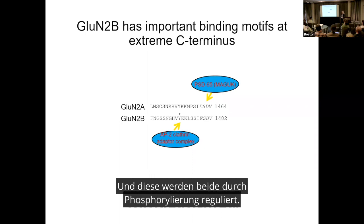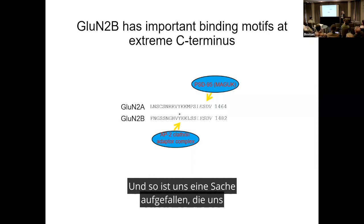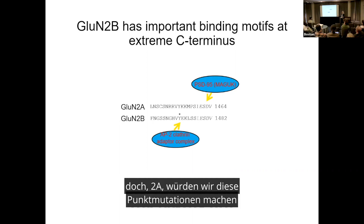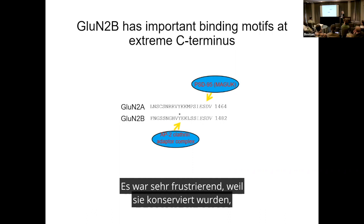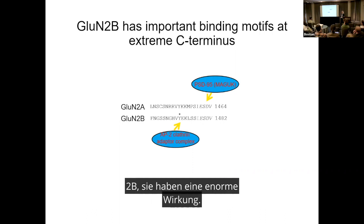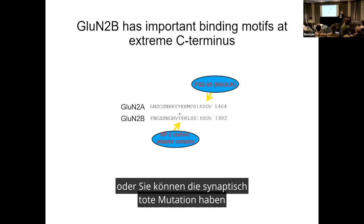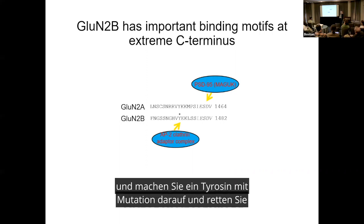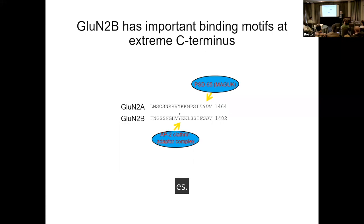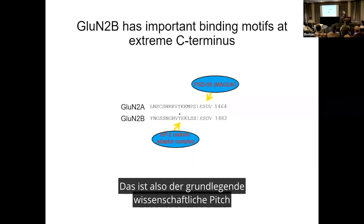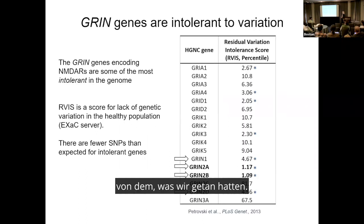These motifs are both regulated by phosphorylation. One thing that struck us through all these years of studying them is that the motifs are very highly conserved, yet in GluN2A we would make these point mutations and they were almost inert — no effect. It was very frustrating because they were conserved, suggesting they should have huge effects. You can have point mutations that make it synaptically dead, or do a tyrosine mutation on top and rescue it — exquisite regulation in that short stretch.